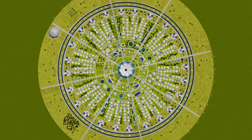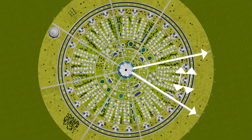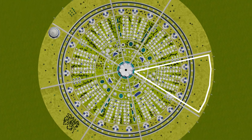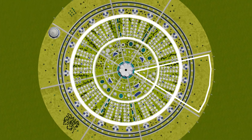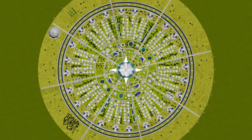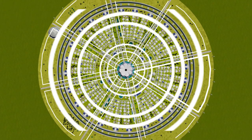A circular city is most practically divided via pathways into areas known as radial sectors and circular belts, also known as circulars or rings. The radial sectors, separated by pathways, are subdivided by circular belts, also separated by pathways, which extend outward from a central point, forming a widening circular grid structure.